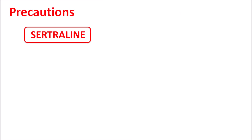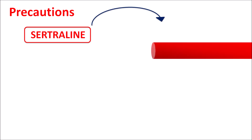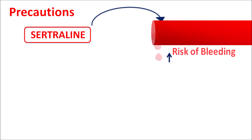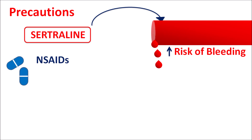Now, what are the precautions of sertraline? One important precaution is that it can increase the risk of bleeding in patients. This drug can produce vasodilatation as well as leakiness in blood vessels, resulting in increased risk of bleeding. This is more important when the drug is combined with other drugs such as NSAIDs — for instance, aspirin, which acts as an antiplatelet agent.